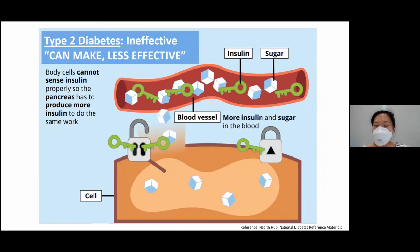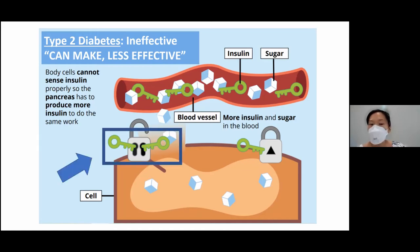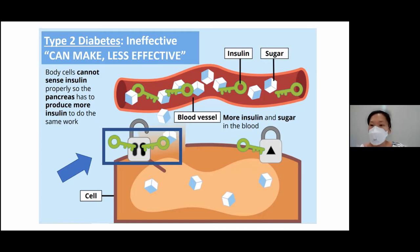Type 2 diabetes is when insulin is ineffective. Looking at the diagram, one green key — representing insulin — used to do a certain amount of work, but now we need two insulin molecules to unlock and make use of one single molecule of glucose. The pancreas has to work a lot harder than it used to, and when the body cannot cope, this is when type 2 diabetes actually happens.